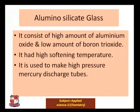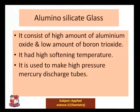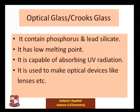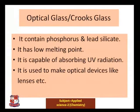Alumino silicate glass contains a very high amount of aluminium oxide and a low amount of boron trioxide. It has a high softening temperature and is used to make high-pressure and mercury discharge tubes. Optical glass, or Crookes glass, contains phosphorous and lead silicate, has a low melting point, and is capable of absorbing harmful UV radiation.